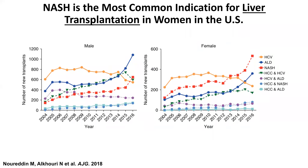NASH and fatty liver disease is also a common indication for liver transplantation. In a study we published in 2018 looking at liver transplant cases in the United States, NASH fatty liver is now the most common indication among female patients, and the second most common indication among men after alcoholic liver disease. Because so many people have fatty liver disease, it is contributing significantly to the number of liver transplants performed in the United States.